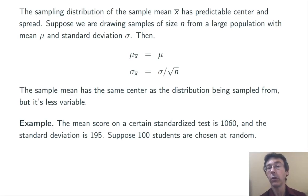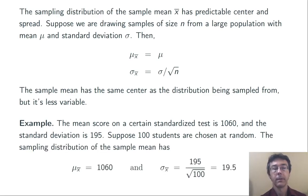Suppose 100 students are chosen at random. In this case, we'll assume it's a large population, so it's okay if it's not done with replacement. The sampling distribution of the sample mean has center, 1060, and standard deviation, 19.5. The way that we're understanding this is, go out and collect a sample of 100 students and take their average test score.